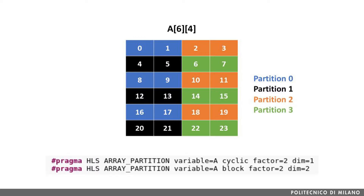Now, if we further partition our matrix on the second dimension — the column dimension — with block partitioning with factor 2, we obtain the results shown in the picture. Basically, we get 4 partitions: the odd rows in the first two columns, the even rows in the first two columns, the odd rows in the second two columns, and the even rows in the second two columns.